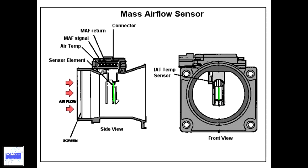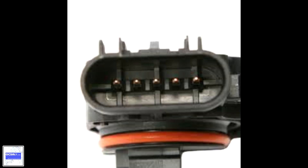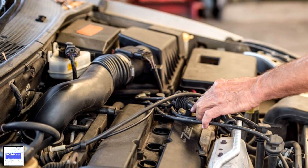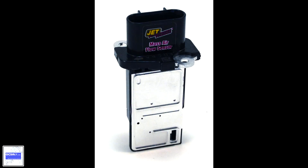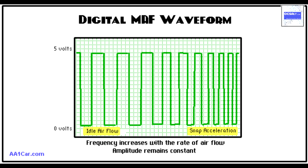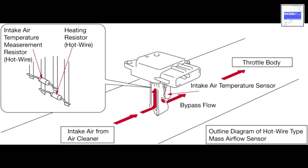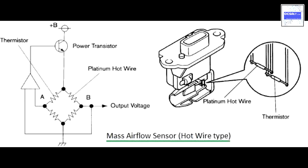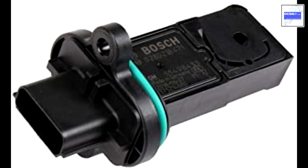The following trouble codes are usually associated with a mass air flow sensor: P0100 – mass air flow circuit malfunction; P0101 – mass air flow circuit range/performance; P0102 – mass air flow circuit low; P0103 – mass air flow circuit high; P0104 – mass air flow circuit intermittent. Trouble codes P0171 (system too lean, bank 1) and P0174 (system too lean, bank 2) are also often caused by a bad or contaminated mass air flow sensor.